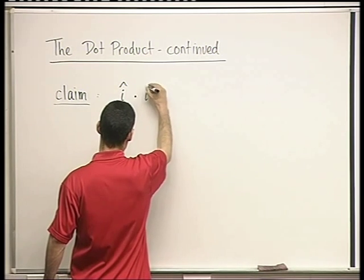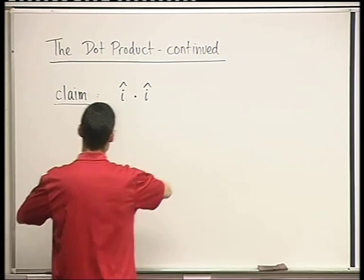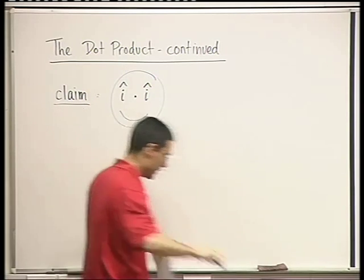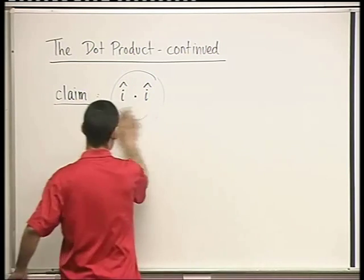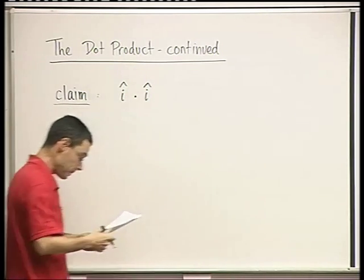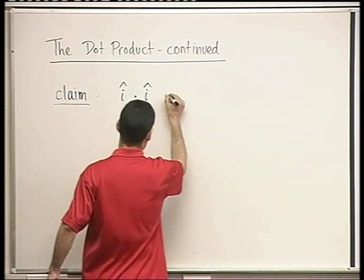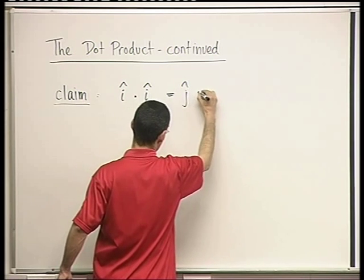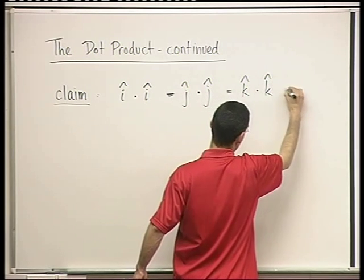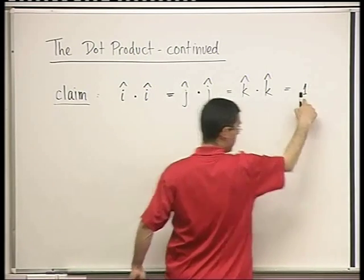The claim is: what is i dot i? And it's the same as j dot j, and the same as k dot k. They're all equal to just one — the scalar one.